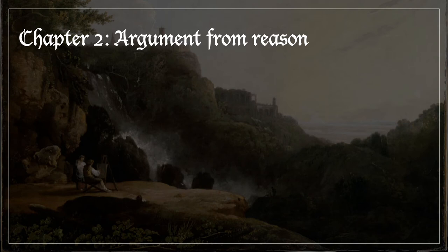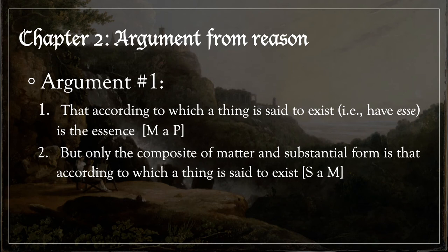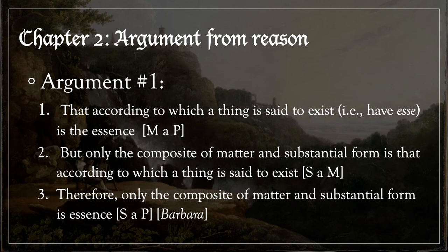St. Thomas proves the same conclusion — namely that the essence of a composite substance is itself composed out of sensible matter and substantial form — in a third way, by an argument from reason. The argument proceeds as follows. Premise 1: that according to which a thing is said to exist, that is to have 'esse', is the essence. But only the composite of matter and form — that is the composite of sensible matter and substantial form — is that according to which a thing is said to exist. Therefore, it follows by the syllogistic form Barbara that only the composite of matter and substantial form is the essence.